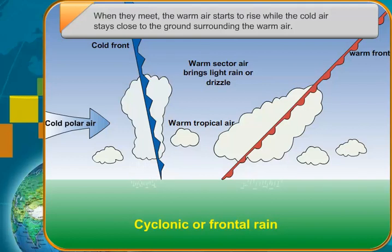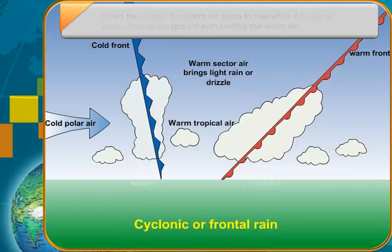The winds swirl to the centre, while the rising air cools and falls as rain. Such rains occur in tropical and temperate regions.